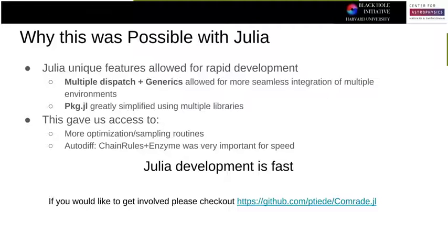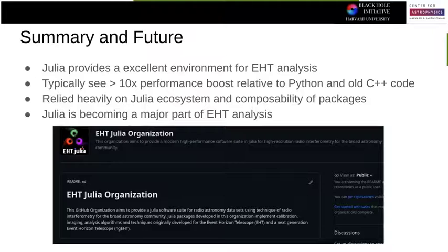Why was this possible with Julia? Multiple dispatch, generics, and the package system really helped — not having to statically or dynamically link stuff in C++ helped me a lot. All of this allowed me to really dig into optimization more so than I was able to do in C++. Julia's not faster than C++ — I will never claim that — but all it lets me do as a poor astronomer is more easily figure out where to optimize and not have to dig through thousands of lines of C or C++ code. Summary: Julia provides an excellent environment for analysis. We typically see a 10x performance boost. Julia is becoming a major part — we are developing the next backbone at least partially in Julia. Myself and Kazu Akiyama at MIT Haystack are going to be trying to lead this forward.